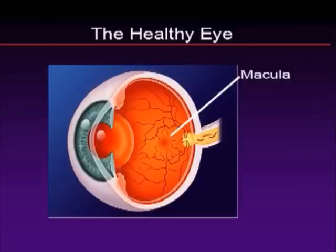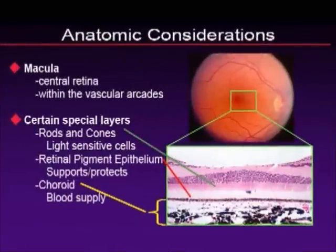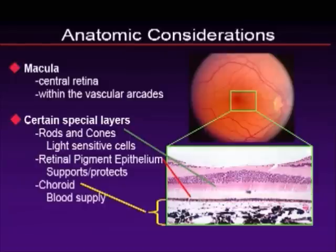This is really where macular degeneration begins. The macula is between the two arcades and is the central part of the retina that has specialized layers of cells. There are the rods and cones, which are the light-sensitive cells, and then there's the retinal pigment epithelium, which is the protective structure underneath the retina. Underneath the RPE, we have the choroid, which is the blood supply to the RPE and the outer segments of the rods and cones.